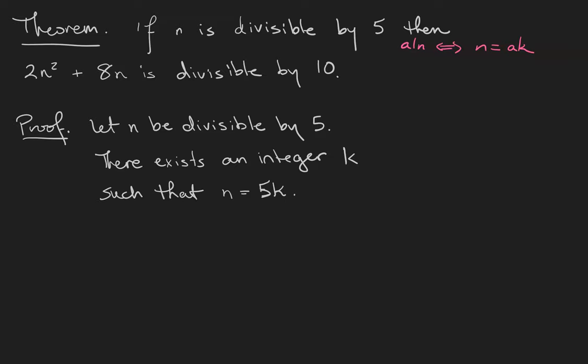So we're going to prove the theorem that if n is divisible by 5, then 2n² + 8n is divisible by 10. In the last video we walked through one direct proof, so this one's going to start in much the same way. We always start by assuming our hypothesis. There's just one in this theorem: that n is divisible by 5. And then we unpack any definitions involved.